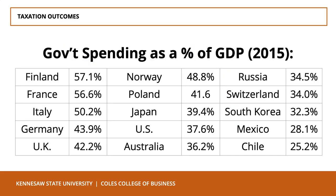Since government spending is a part of GDP, and GDP represents the size of an economy, let's compare government spending as a percentage of GDP across several different countries to see the level to which these countries are involved in the economy, relative to households, firms, and the rest of the world via net exports.